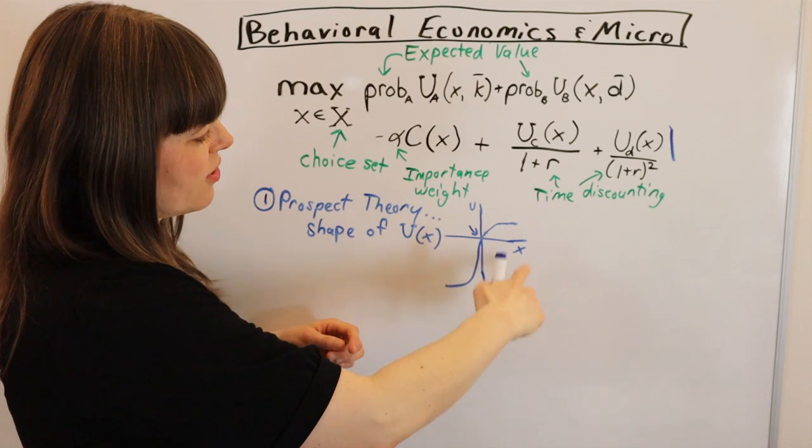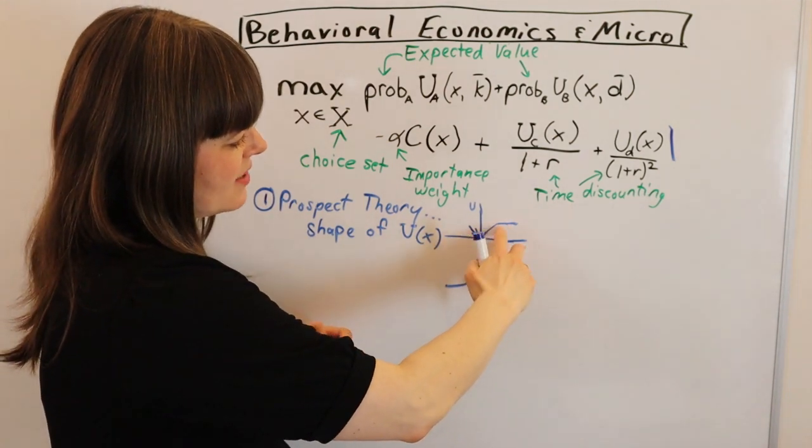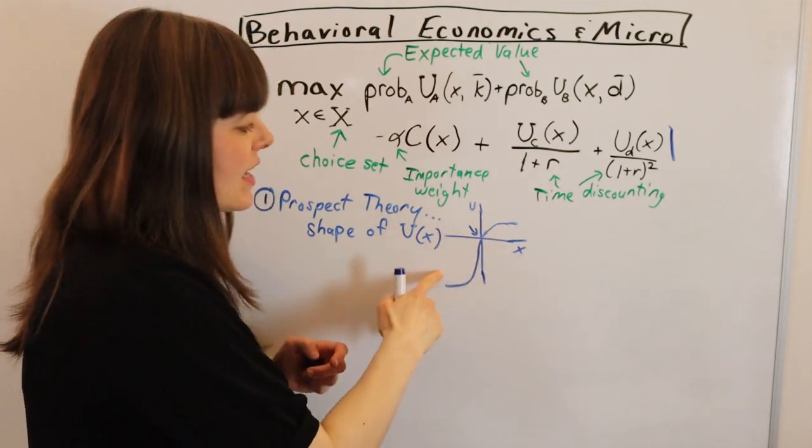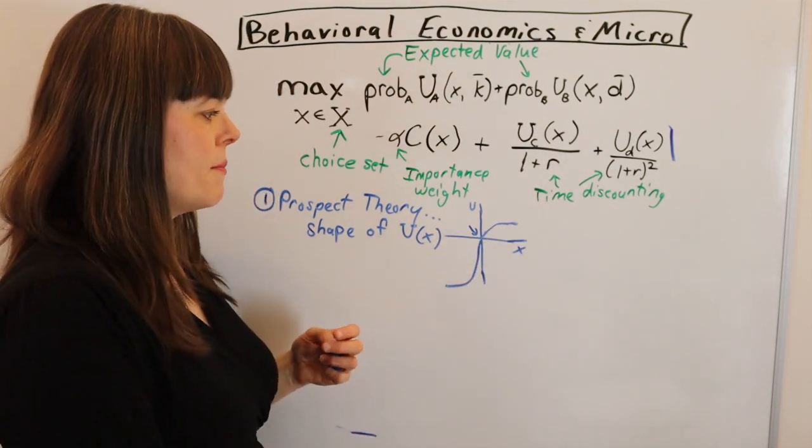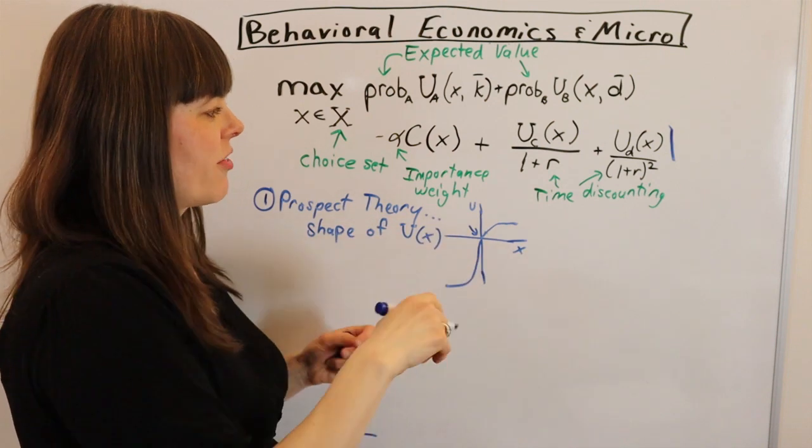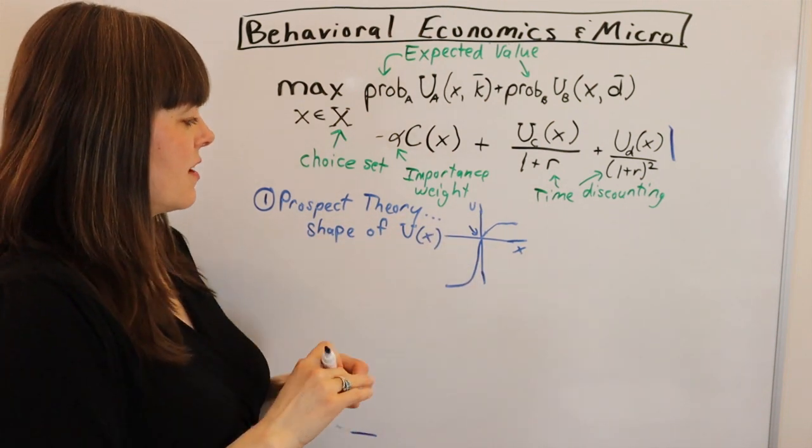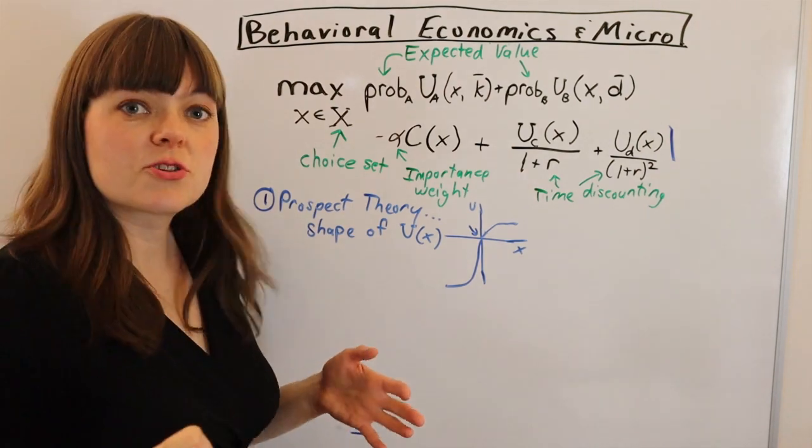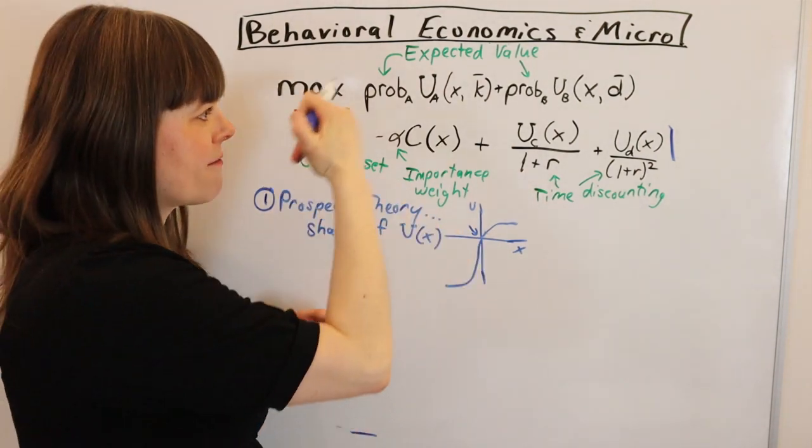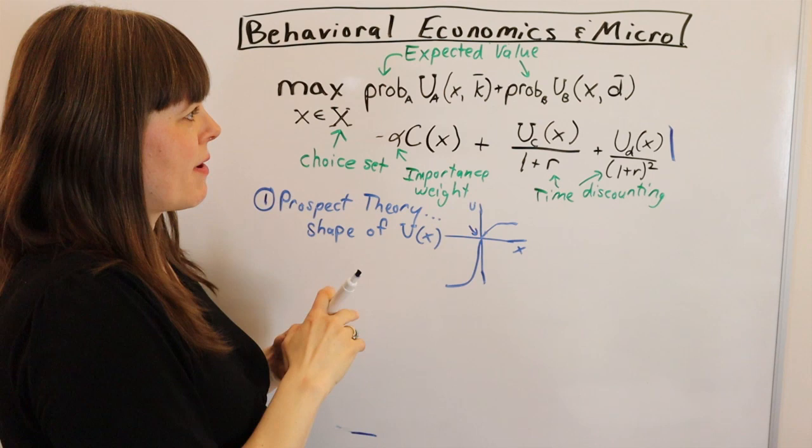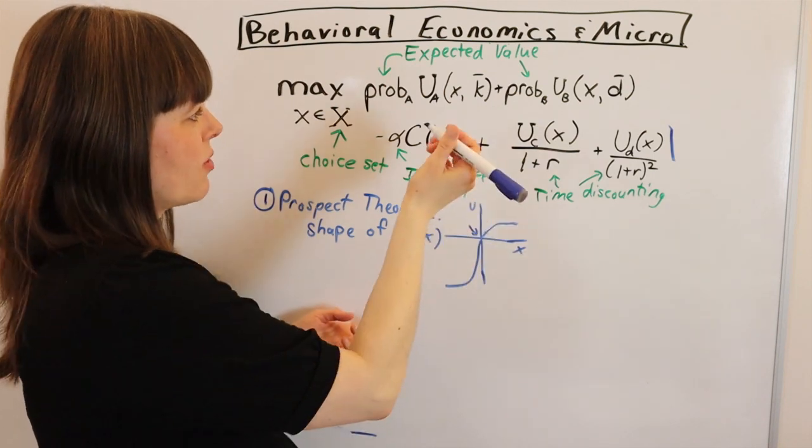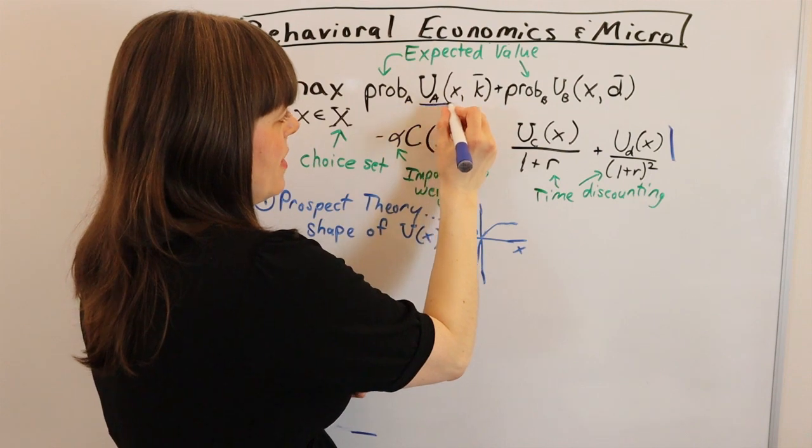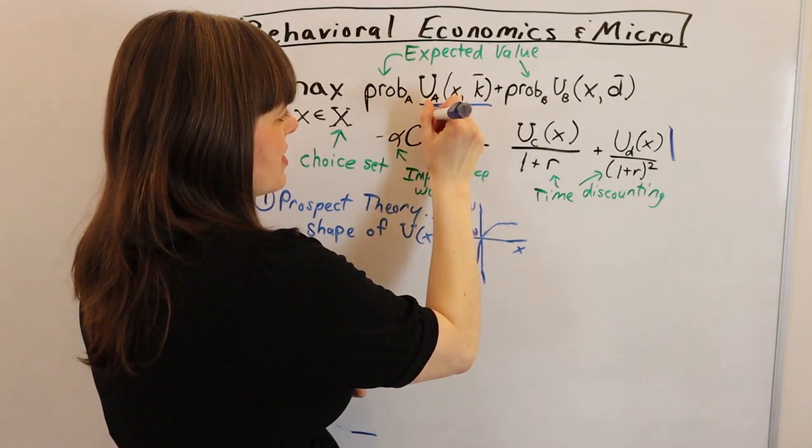And then the other feature of prospect theory is just the fact that we are risk averse in the positive realm and risk seeking in the negative realm. And that shows up in the type of curvature on this graph. So that's the first thing, one of the most important contributions of behavioral economics to modifying our classic microeconomic model. And that's simply going to show up as a change in the shape of the utility function.